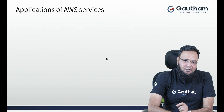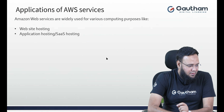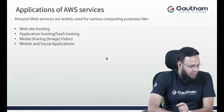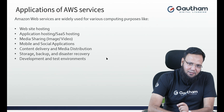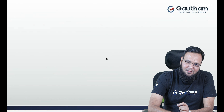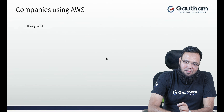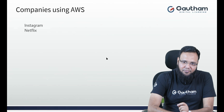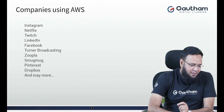Who uses AWS? The most common usages are web hosting, application hosting, SaaS hosting, media sharing, mobile and social applications, content delivery, media distribution, storage and backup, and disaster recovery. There are so many companies who use AWS — like Instagram, Netflix, Twitch, LinkedIn, Facebook, Turner Broadcasting, Zoopla, SmugMug, and so many more.